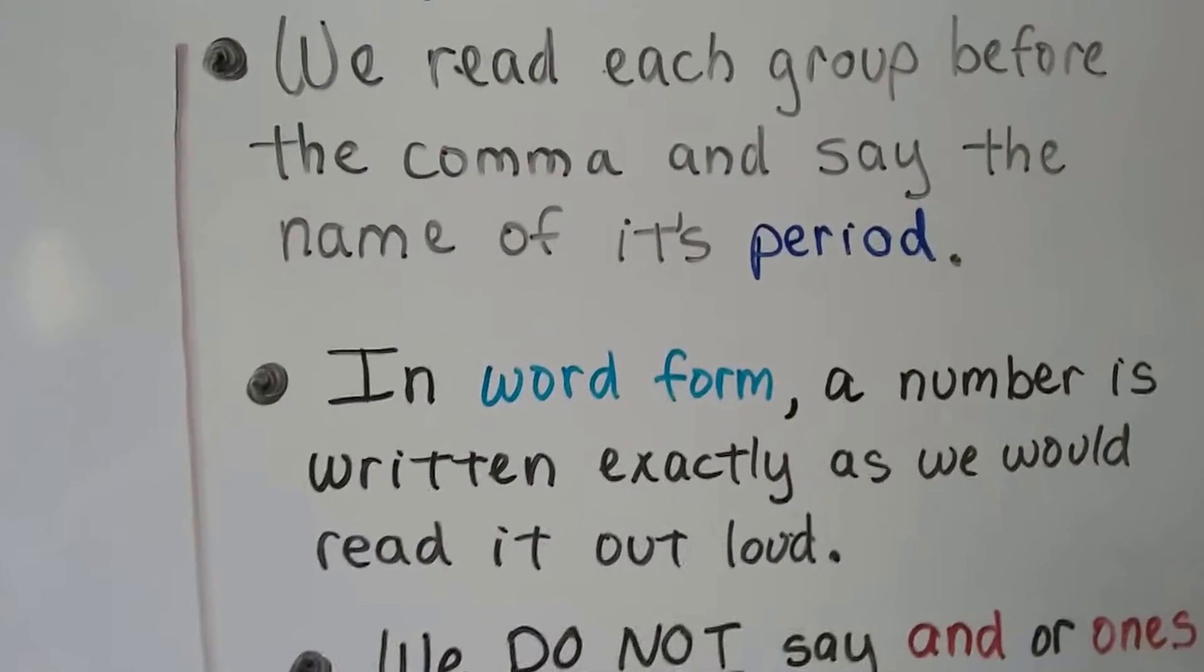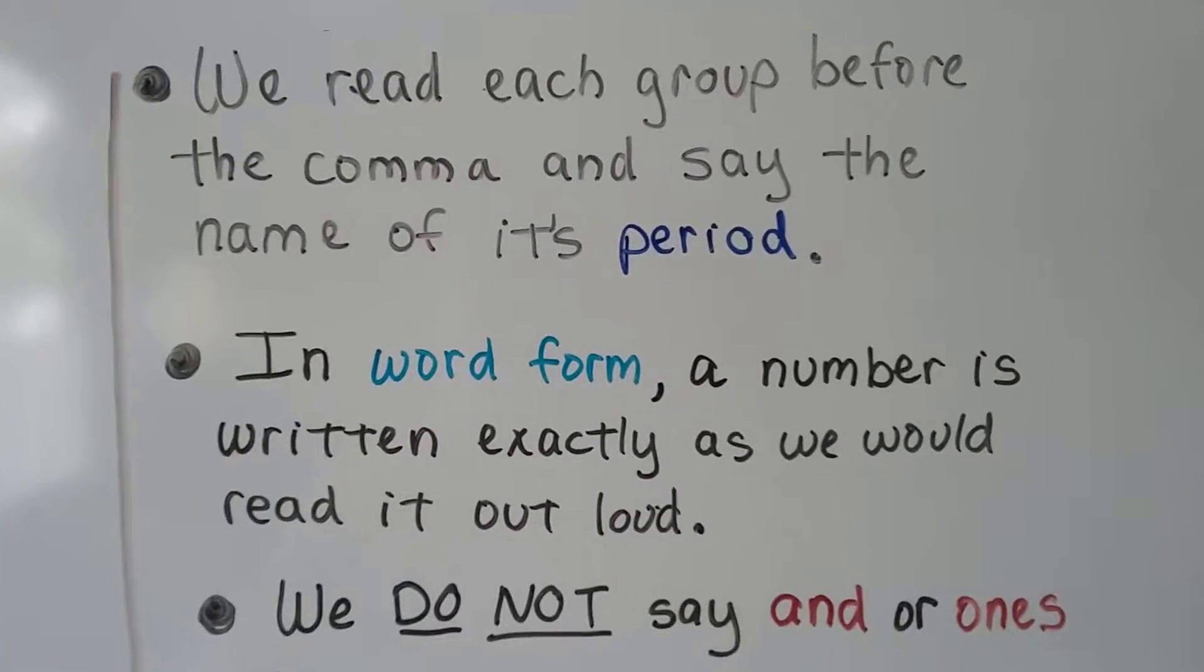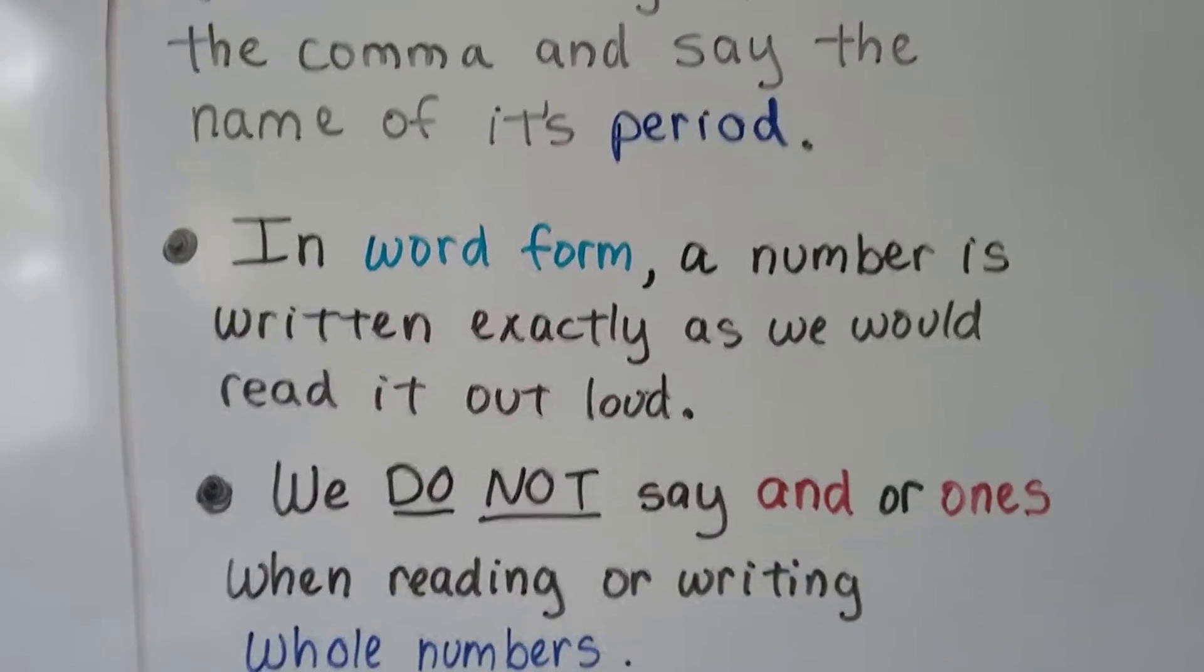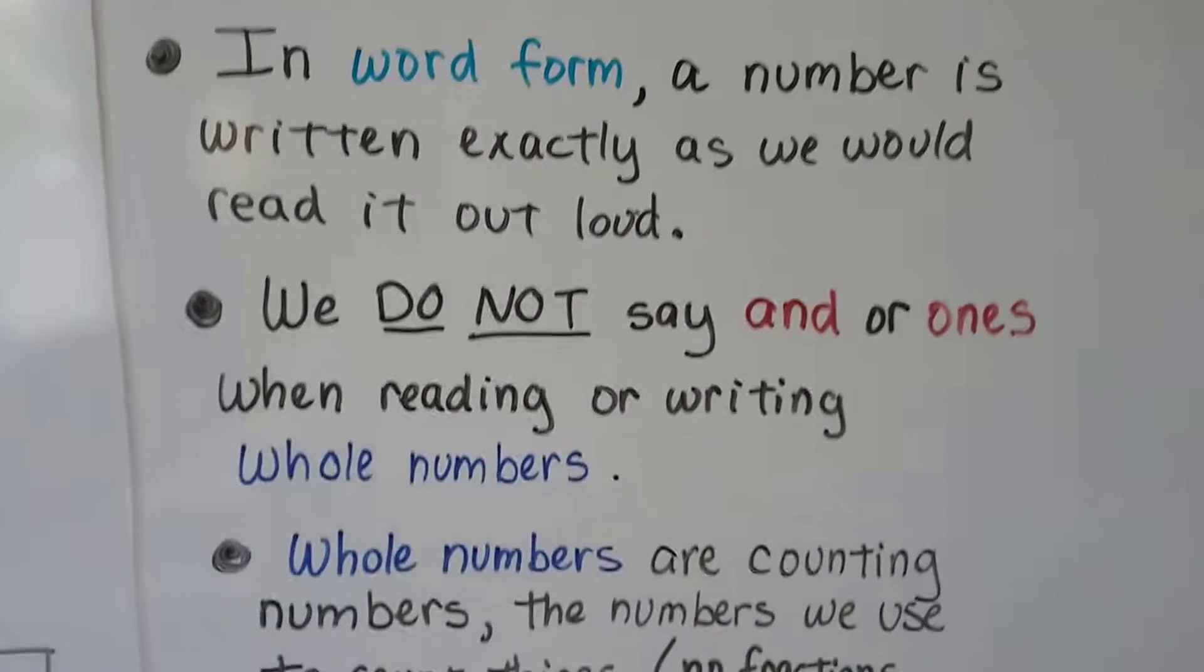We read each group before the comma and say the name of its period. In word form, a number is written exactly as we would read it out loud. We do not say and or ones when reading or writing whole numbers.